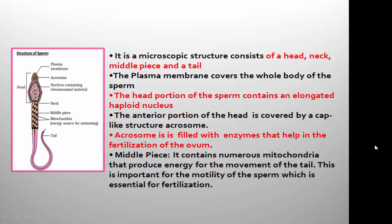Spermatids are not the actual sperms — they undergo modification and get transformed into actual sperms through a process called spermiogenesis. Now let us go over the structure of the sperm in humans. Sperm is the male gamete, a product of spermatogenesis, produced inside the seminiferous tubules of the testis. It is a haploid male gamete, and the process by which sperms are released from the seminiferous tubules is called spermiation.